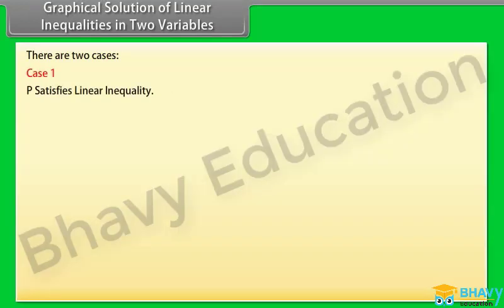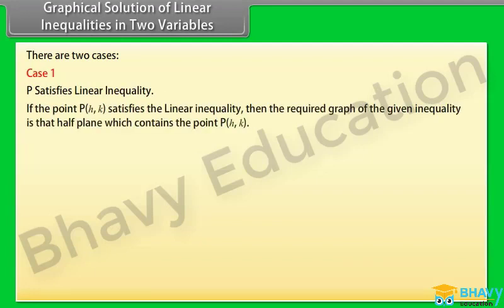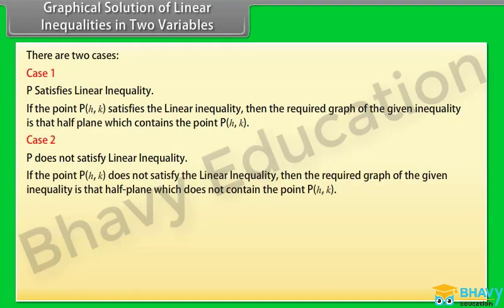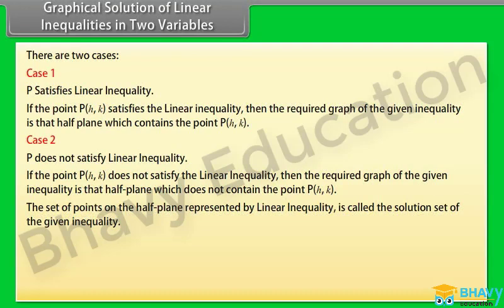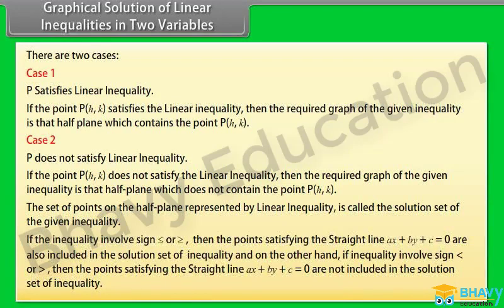Case 1: P satisfies the linear inequality. If the point P(h, k) satisfies the linear inequality, then the required graph of the given inequality is the half plane which contains the point P(h, k). The set of points on the half plane represented by the linear inequality is called the solution set of the given inequality. If the inequality involves the sign less than or equal or greater than or equal, then the points satisfying the straight line Ax plus By plus C equals 0 are also included in the solution set.